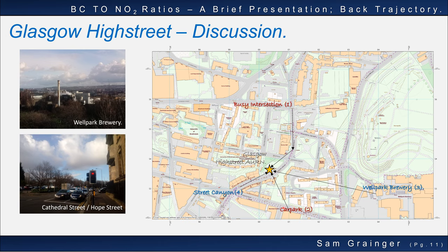Feature 3 was a cold spot with a high relative BC concentration to NO2. This may have been due to a BC-rich source — the conjectured source being the Wellpark Brewery, which emits as much as 1,242 tonnes of BC annually according to their emissions log. Odorous pollution is also an anecdotal brewery-related pollutant in this area. Finally, cold spot 4 was conjectured to be due to a local street canyon effect within the Glasgow High Street enclosed area, just to the south of the monitoring station, with a ratio of BC to NO2 of 10 to 1, similar to ratios at Hope Street, another well-known street canyon.